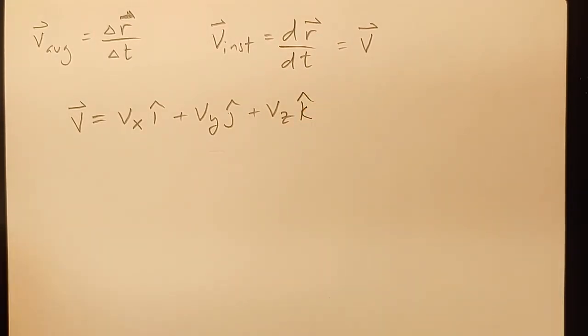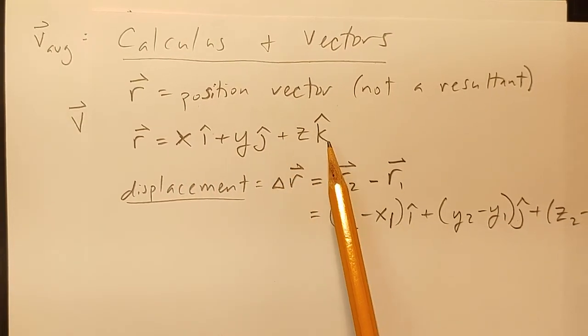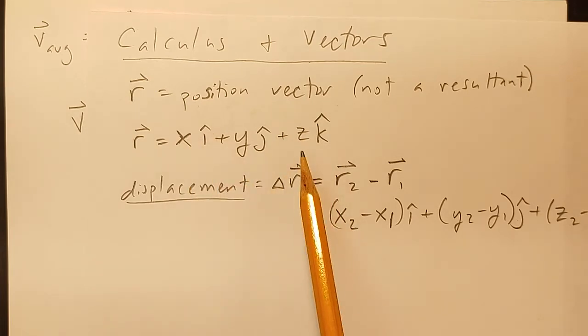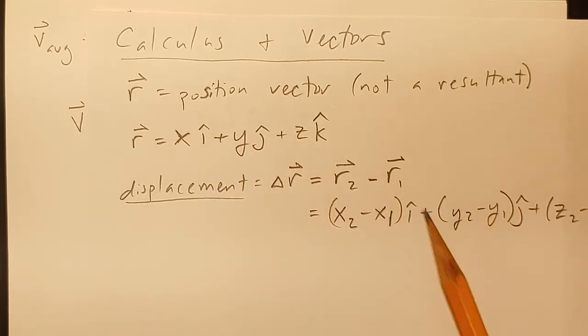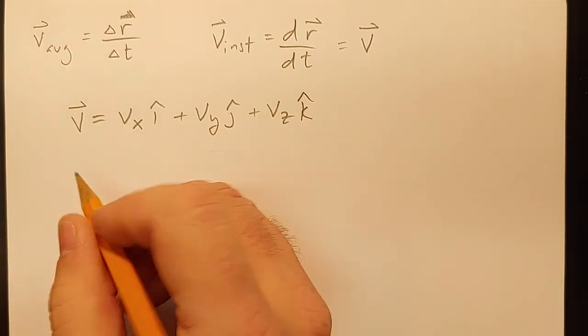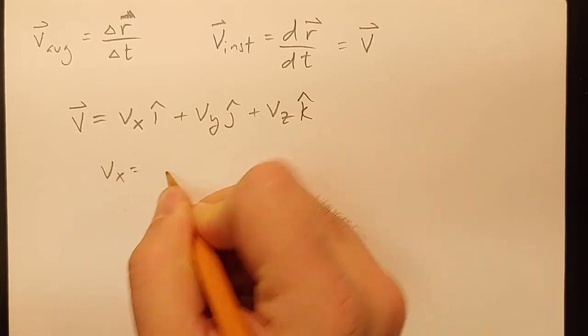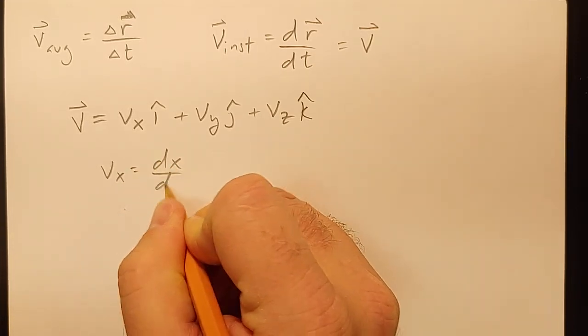We are taking the derivative of our position, which has each one of these things. Just like in calculus, when you take the derivative of a bunch of terms that are summed together, you just take the derivative of each one separately. So vx is just the derivative of x with respect to time.